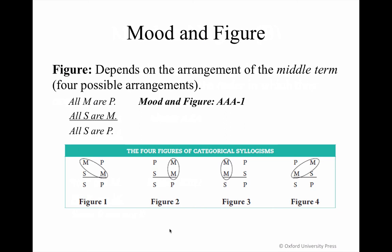In the categorical syllogism, the arrangement of subject and predicate positions has nothing to do with the grammatical subject or predicate in the relevant premises. Going back to our example, the mood was AAA, and you can see from the location of the middle term in the major and minor premises that the figure is one.